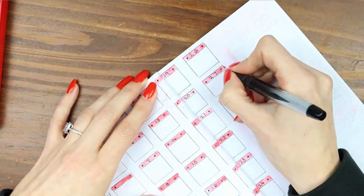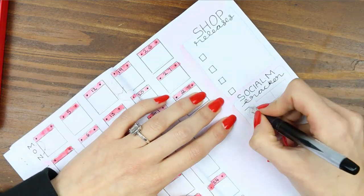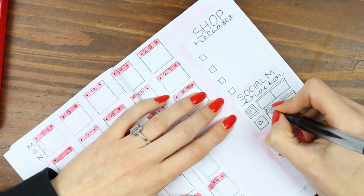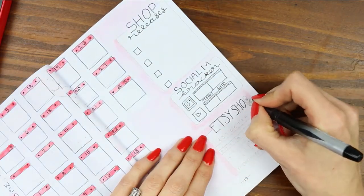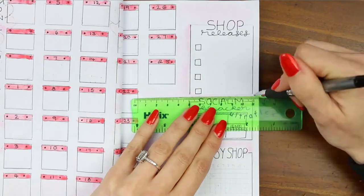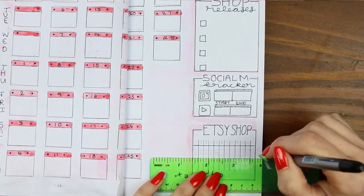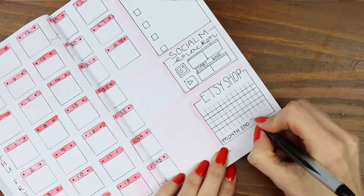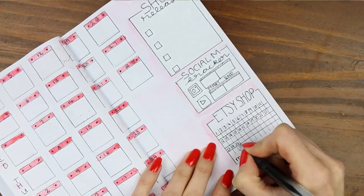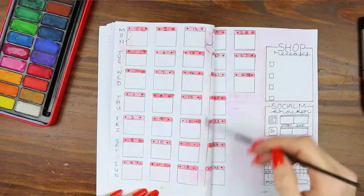Now moving on to my sidebar I wanted a place where I could write down my shop releases, where I could track my social media for the month, and then at the bottom there it's just like a little tracker for my Etsy shop. And then once I'd finished that I went back and finished my little light pink wash in the background.